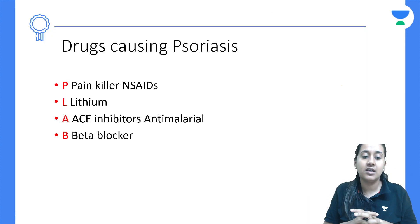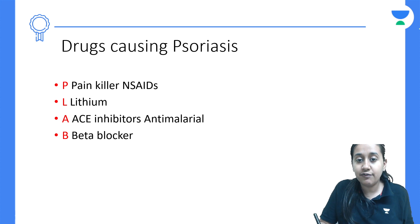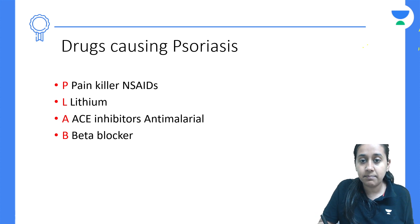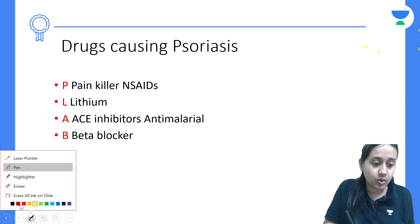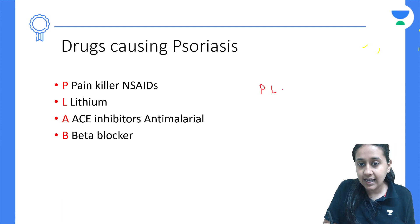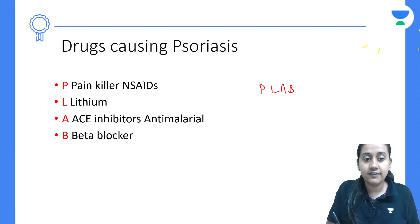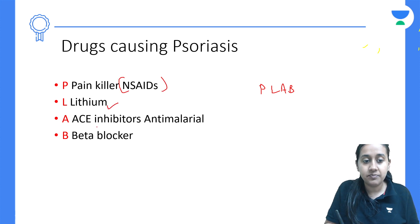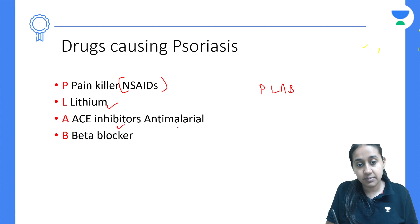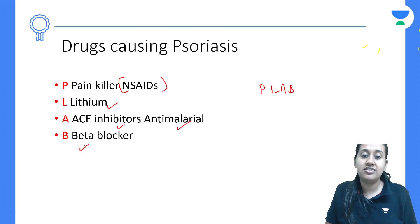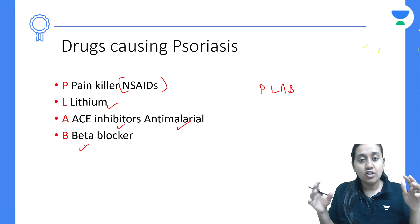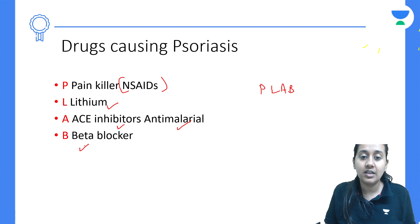The mnemonic of the day is for drugs causing psoriasis. The mnemonic is PLAB: P stands for Painkillers, which includes NSAIDs; L stands for Lithium; A stands for ACE inhibitors and Anti-malarials; and B stands for Beta blockers.